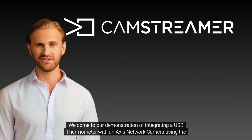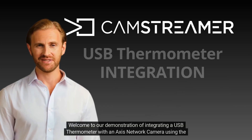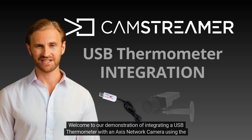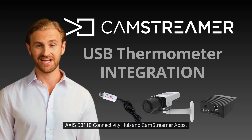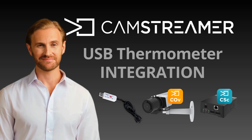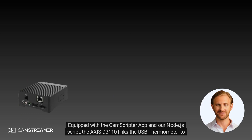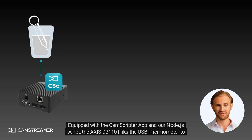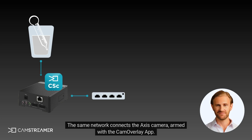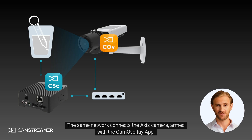Welcome to our demonstration of integrating a USB thermometer with an Axis network camera using the Axis D3110 connectivity hub and CamStreamer apps. Here's how it works. Equipped with the CamScripter app and our Node2JS script, the Axis D3110 links the USB thermometer to the LAN. The same network connects the Axis camera, armed with the CamOverlay app.